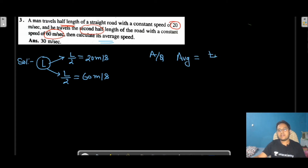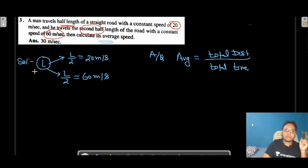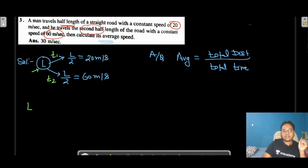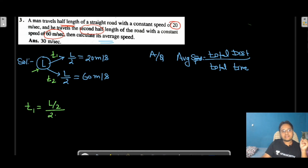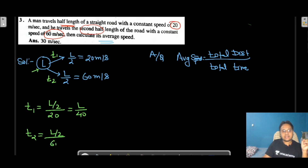The formula for average speed is total distance upon total time. Total distance is L. We need to find total time. Let T1 be the time for the first half and T2 for the second half. Time = distance/speed. So T1 = (L/2)/20 = L/40. Similarly, T2 = (L/2)/60 = L/120.